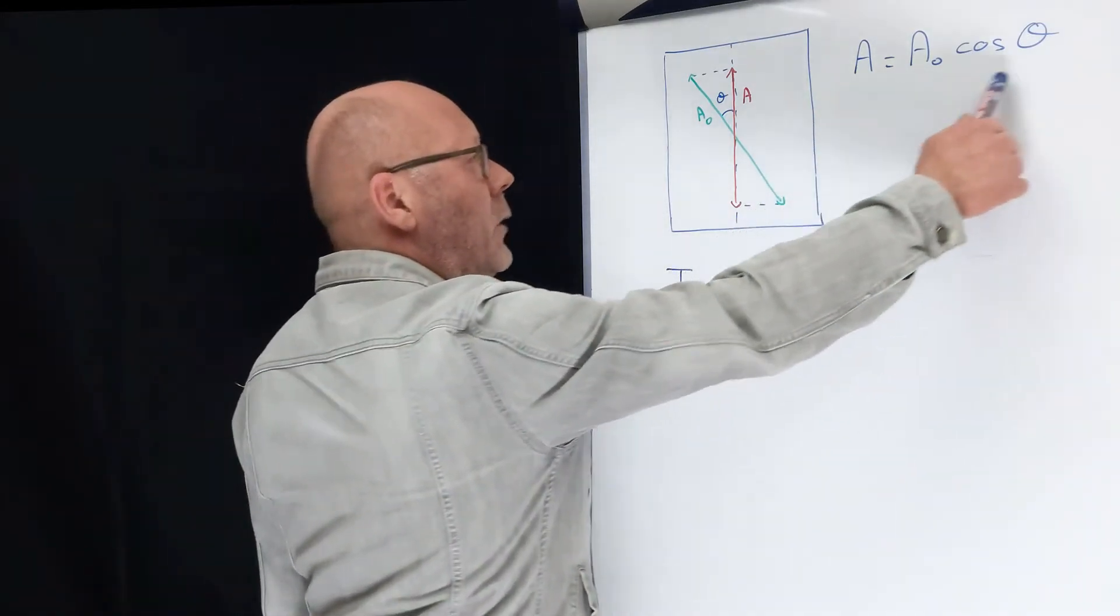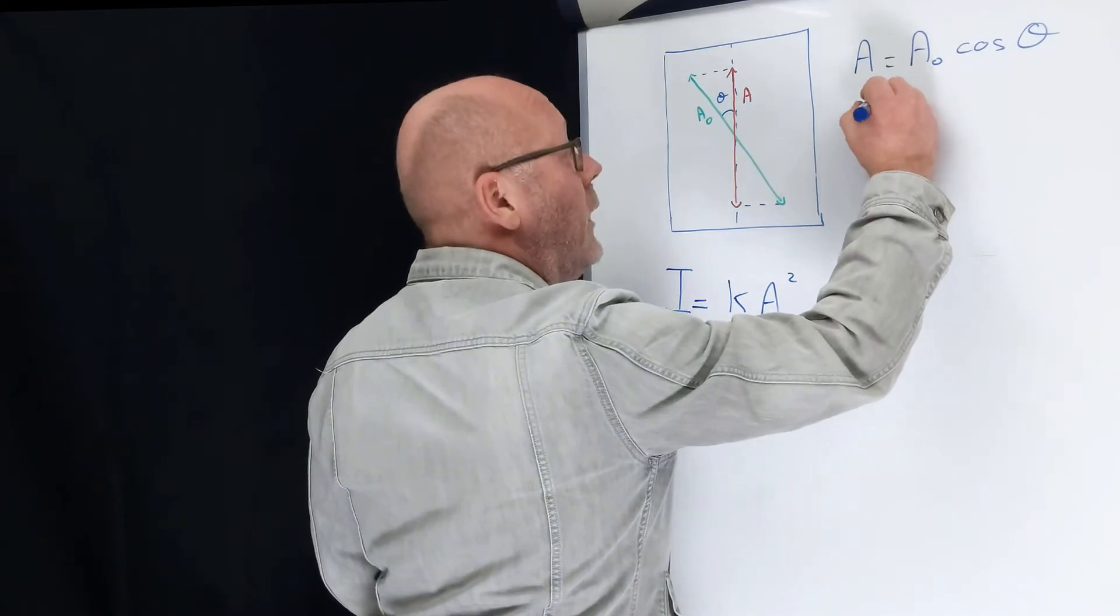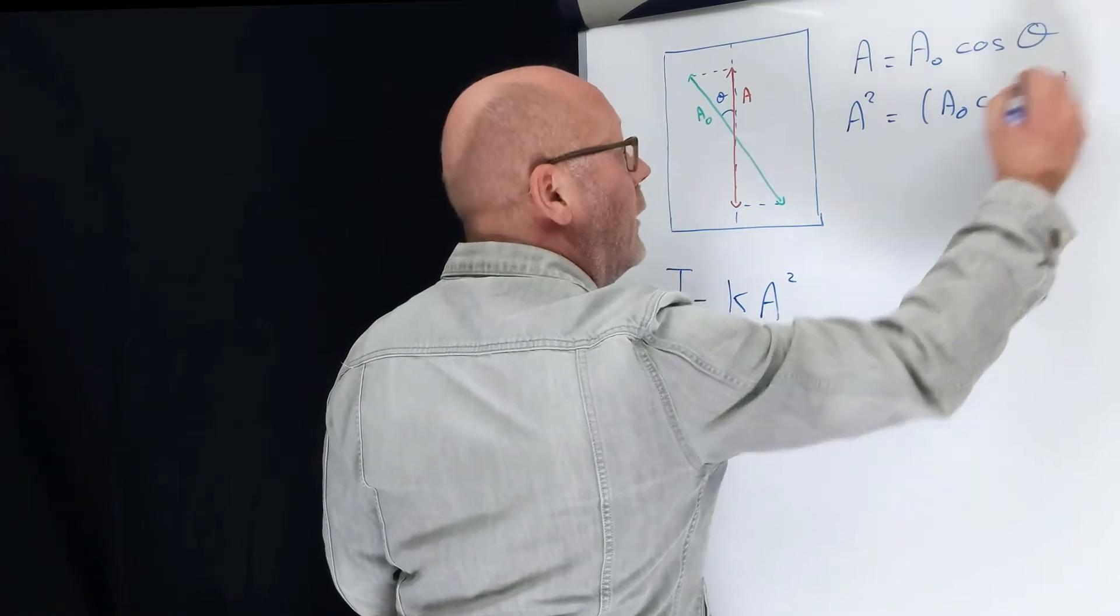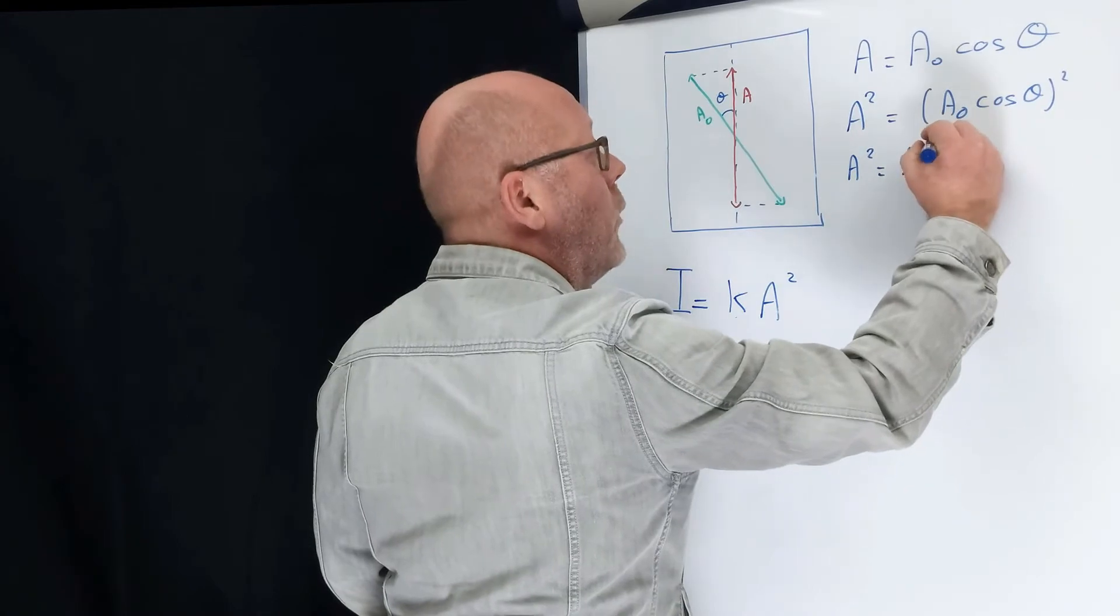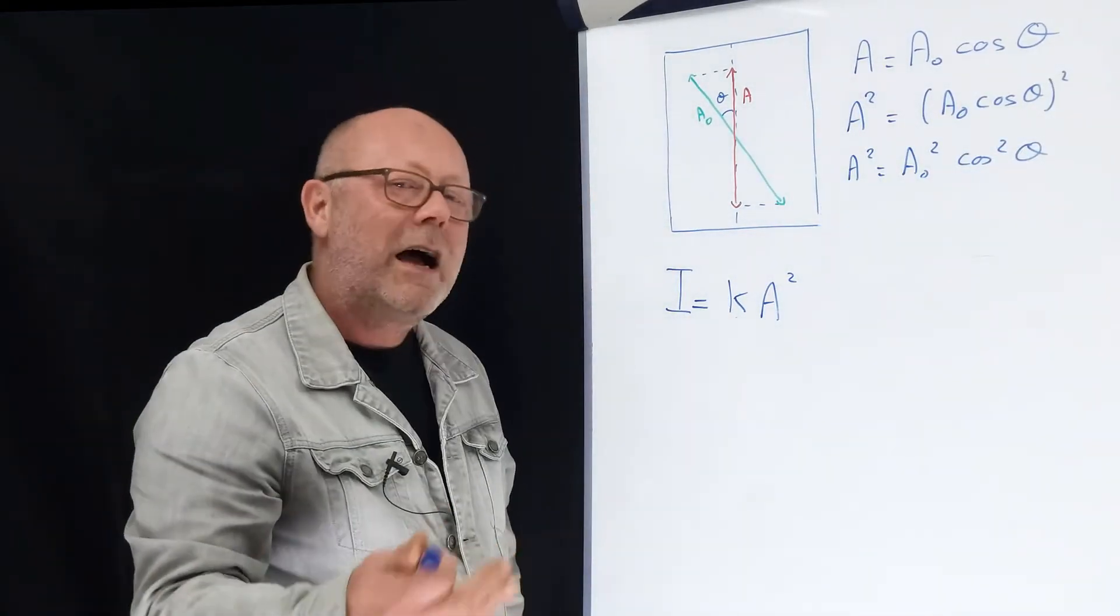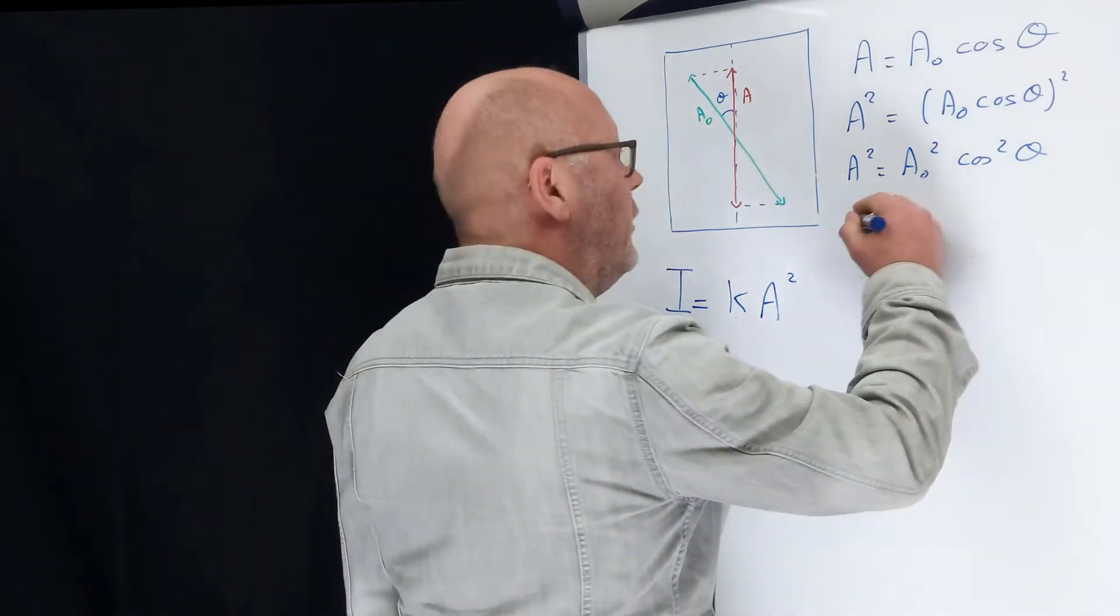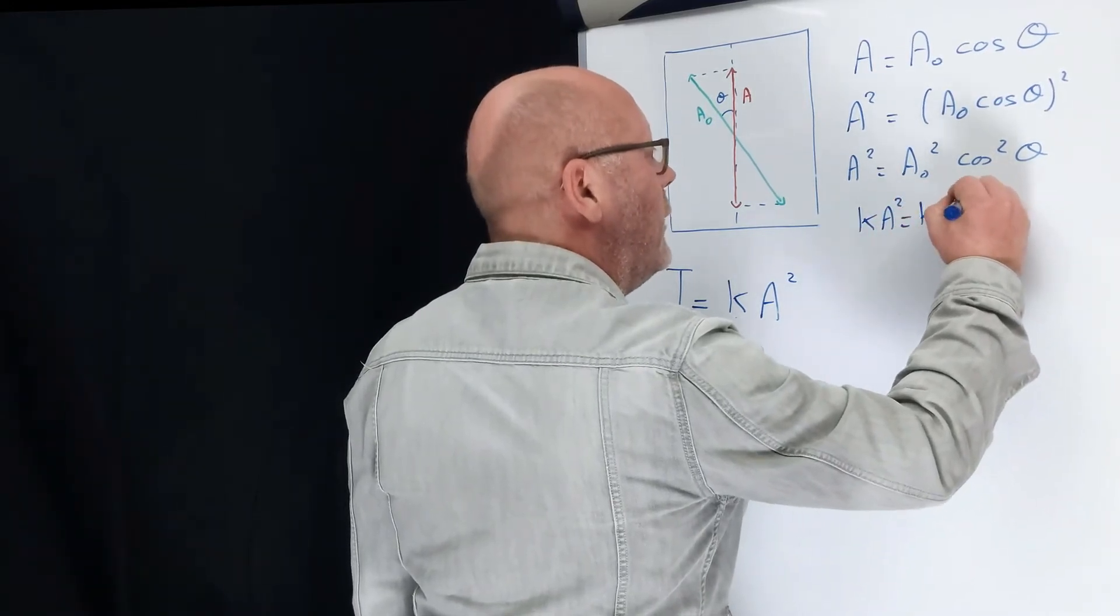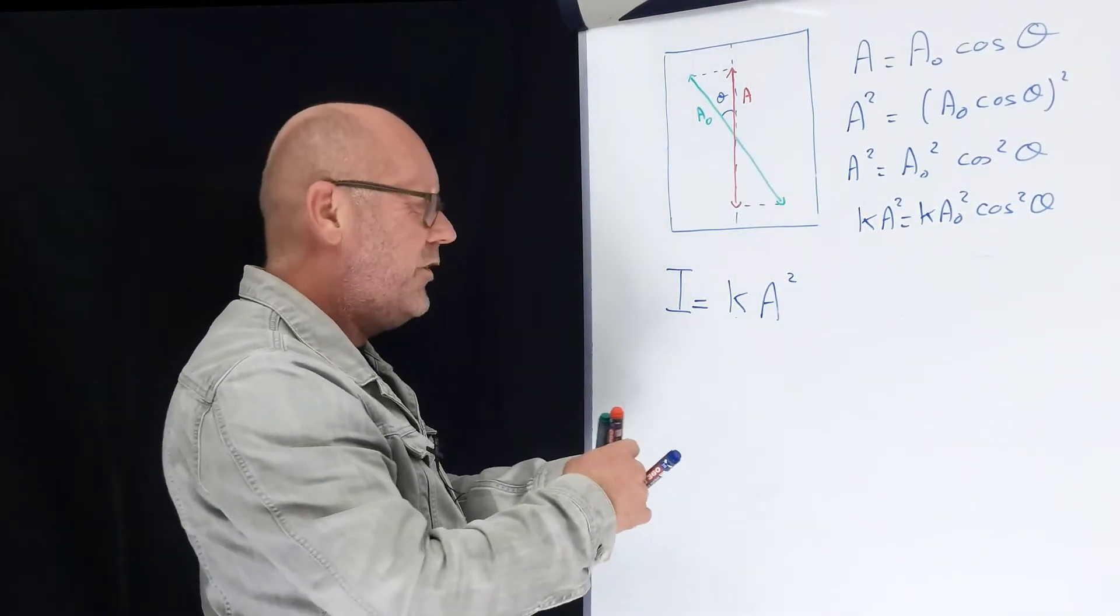Let's play a little bit with this equation. I'm going to square both sides. A squared equals A zero cos theta squared. I can develop: A squared equals A zero squared cos squared of theta. I'm allowed to multiply two sides of an equality by the same constant. So I can rewrite this: k A squared equals k A zero squared cos squared of theta.